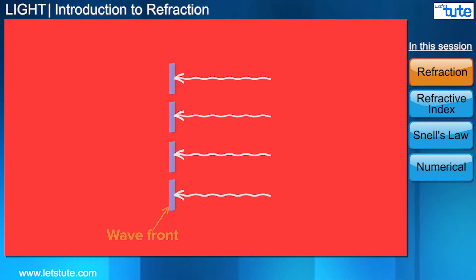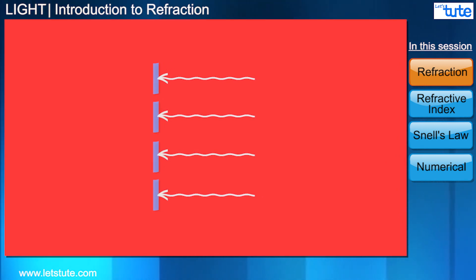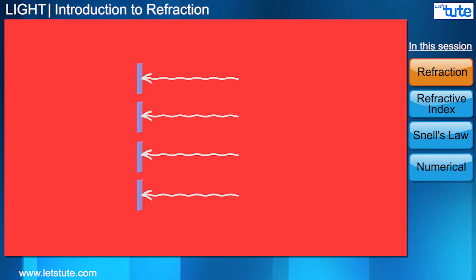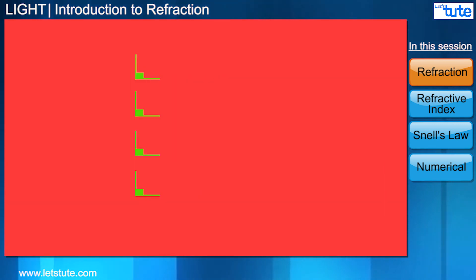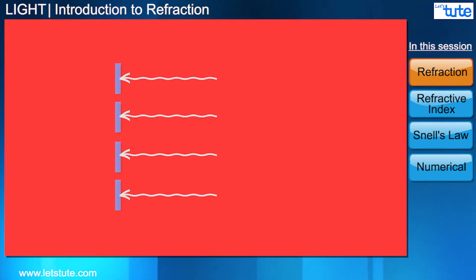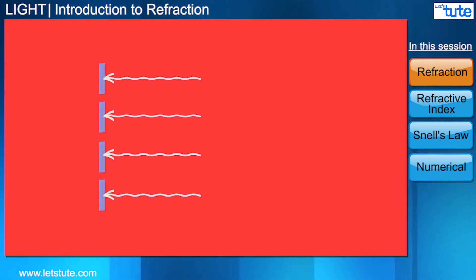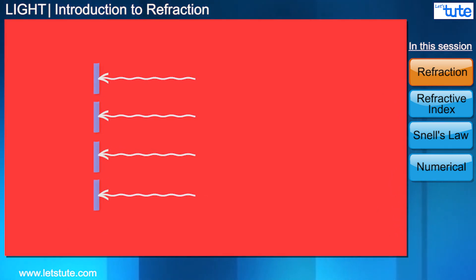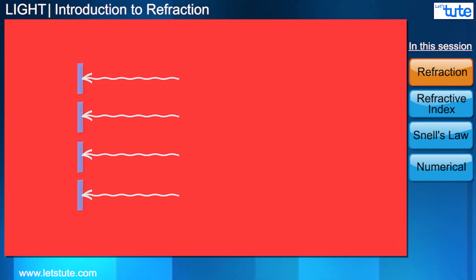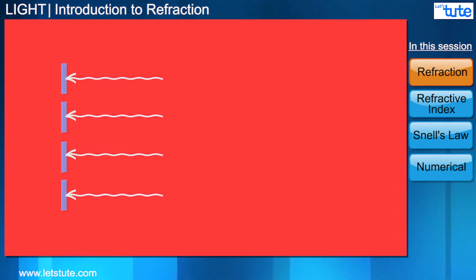So if this is a source of light and the waves are parallel to each other, then the wavefront is just a plane perpendicular to the direction of the motion of the waves, and is situated at the place till where the waves have reached. You can see that the wavefront moves forward at the speed of light.